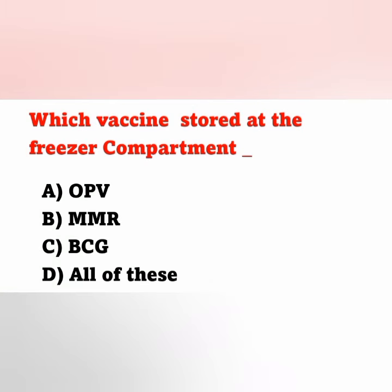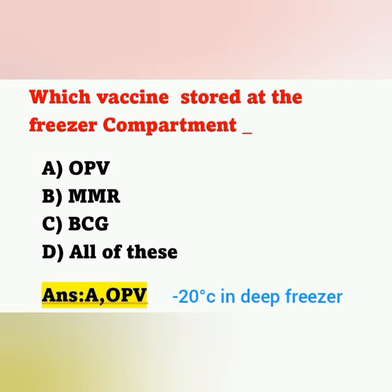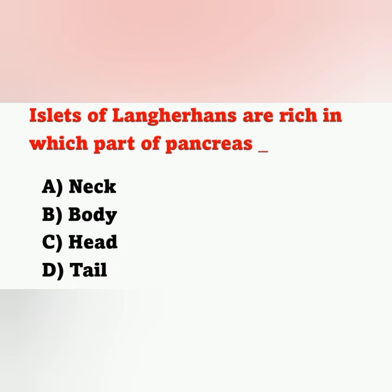Next question: which vaccine is stored in the freezer compartment? Options: A: OPV, B: MMR, C: BCG, D: all of these. The vaccine stored in the freezer compartment is OPV — oral polio vaccine — which should be stored at minus 20 degrees Celsius in a deep freezer.